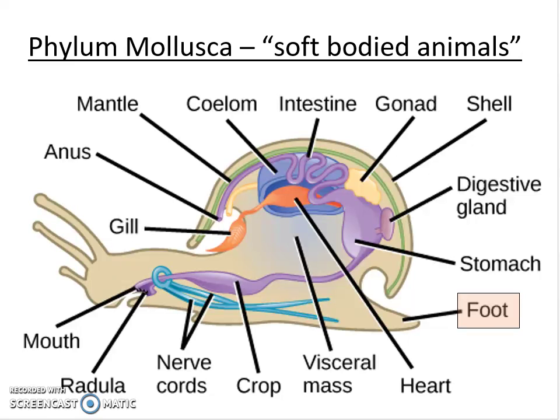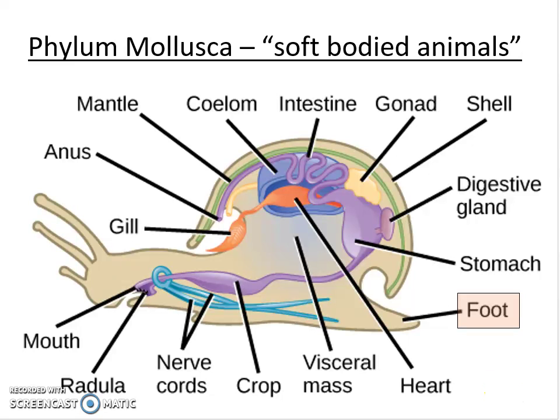Looking at the characteristics of members of this phylum, all of these animals have an interesting muscular foot that they use for moving around — for locomotion. This can come in a variety of different shapes and sizes depending on what animal you're looking at.